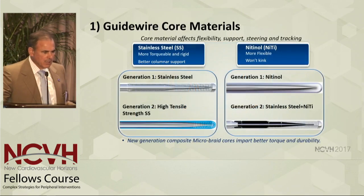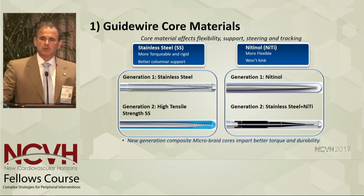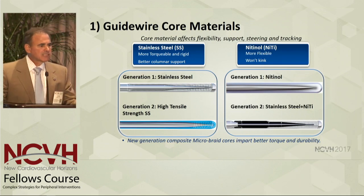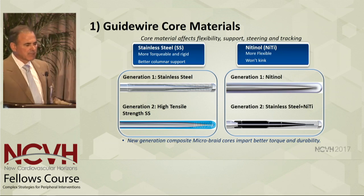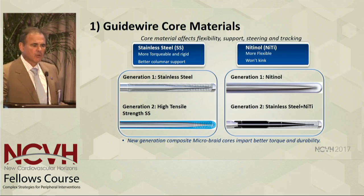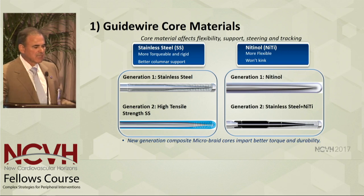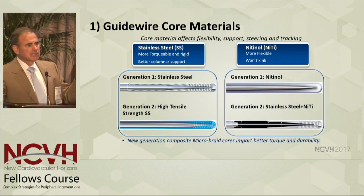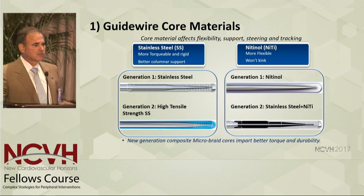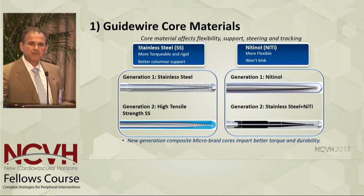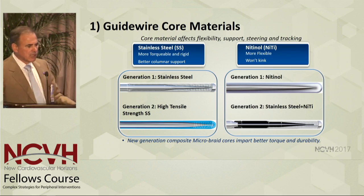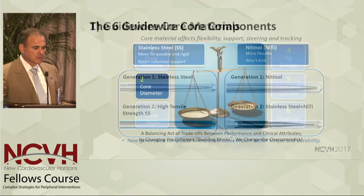The original core material of wires was surgical stainless steel. Now this has been replaced by and large in most wires with high tensile stainless steel, which is not only stronger, but it torques better and it tends to kink less. We also have, as a core material, nitinol. Wires like the glide wire have a nitinol core — it doesn't tend to kink. And we have hybrid wires made of stainless steel coupled with nitinol. Nitinol is more flexible and it won't kink, but we have better columnar support and torque with surgical stainless steel.